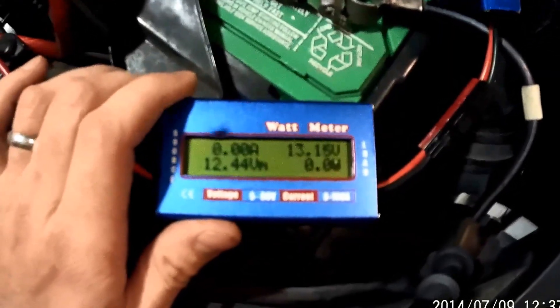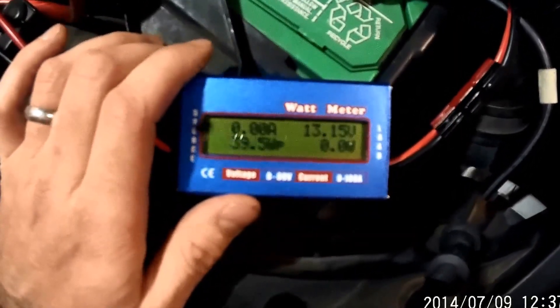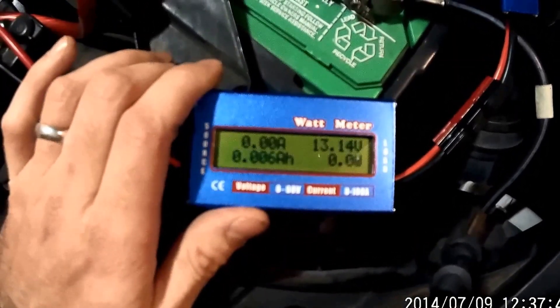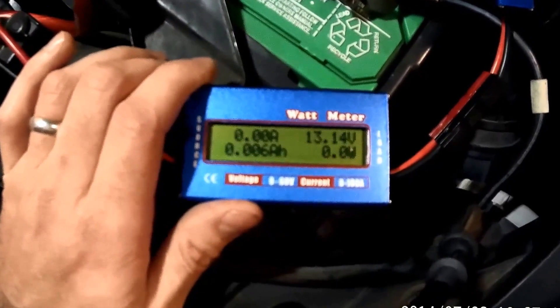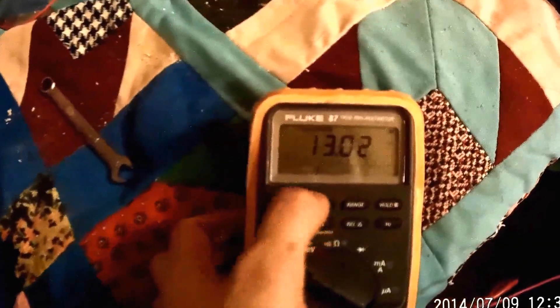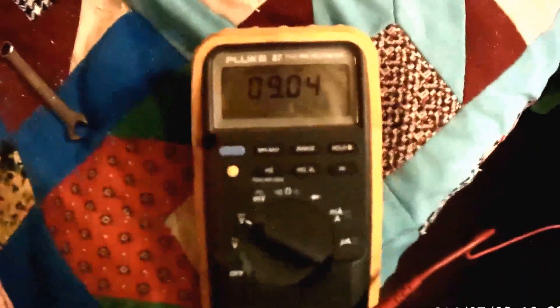Here it shows about 3 amps peak when the car started and the alternator started charging the battery. And then on the voltage here we see that it only dropped to 9 volts.